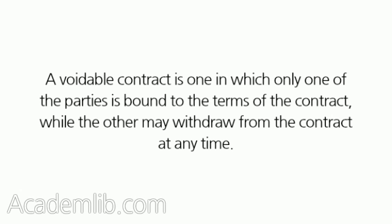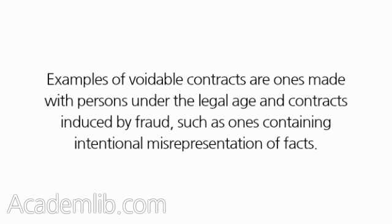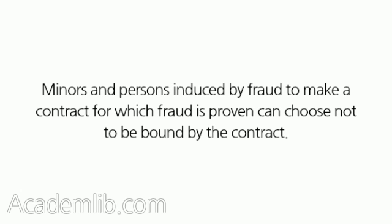A voidable contract is one in which only one of the parties is bound to the terms of the contract, while the other may withdraw from the contract at any time. Examples of voidable contracts are ones made with persons under the legal age and contracts induced by fraud, such as ones containing intentional misrepresentation of facts. Minors and persons induced by fraud to make a contract, for which fraud is proven, can choose not to be bound by the contract.